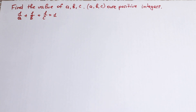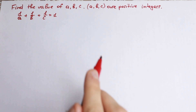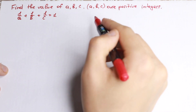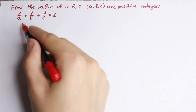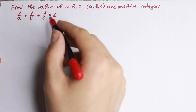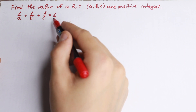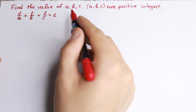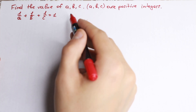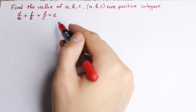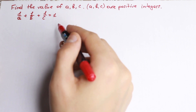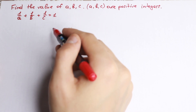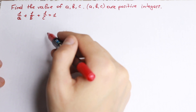Hello everyone! Really interesting Olympiad problem today. Find the value of a, b, c, where a, b, c are positive integers and we have 1/a + 1/b + 1/c = 1. We need to find an integer solution to this problem. There are a lot of approaches, but I want to show you my really interesting tricky approach right here.